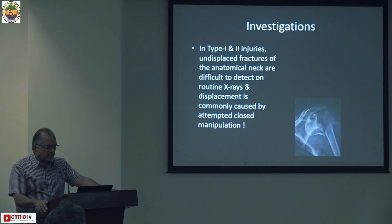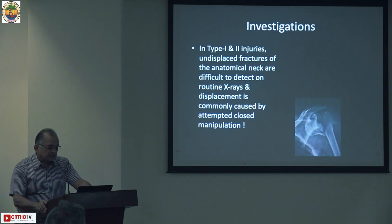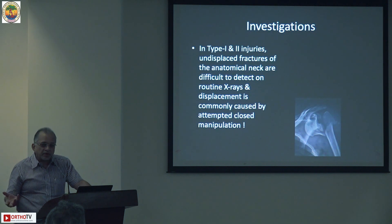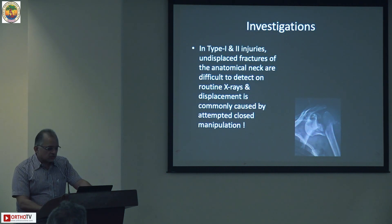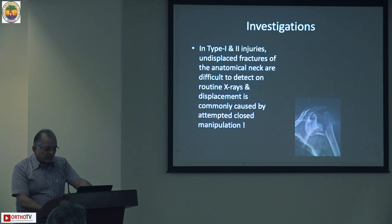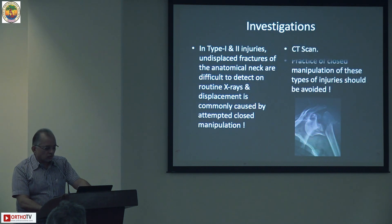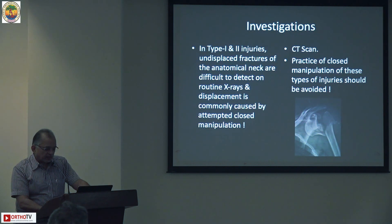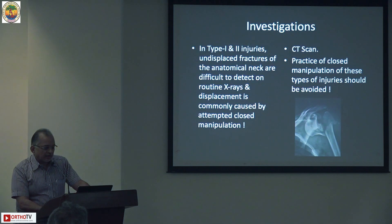The investigations most helpful in Type 1 and Type 2 injuries is CT scan, because many times an undisplaced fracture - while trying to reduce it - you can convert it to a 3-part fracture. Anatomical neck fractures are difficult to detect on routine x-rays, and displacement is commonly caused by attempts at closed reduction. So a CT scan is a must.